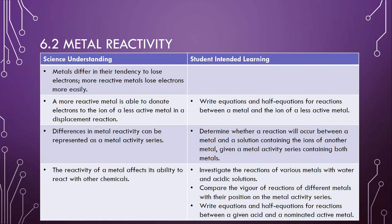More reactive metal is able to donate electrons to the ion of a less reactive metal in a displacement reaction. Differences in metal reactivity can be represented as a metal activity series. Lastly, the reactivity of a metal affects its ability to react with other chemicals, and what you need to be able to do can be found on the right hand side.